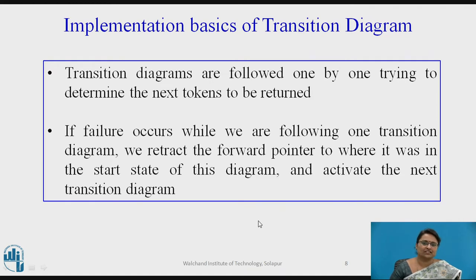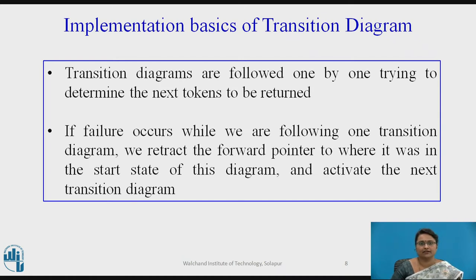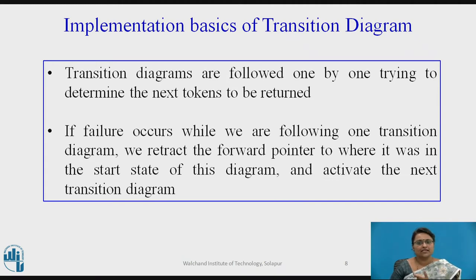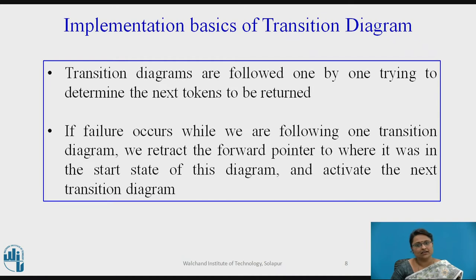Now, the implementation basics of transition diagrams. The transition diagram is followed one by one — it goes from one state to another and returns the token. If a failure occurs in one transition diagram, it moves to the second transition diagram and retracts the forward pointer. It means if a particular lexeme is in the middle and the transition diagram cannot proceed, it comes back to the forward pointer beginning and then gives it to the next transition diagram to read.